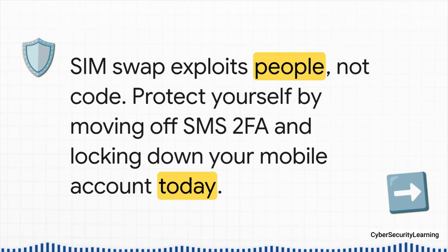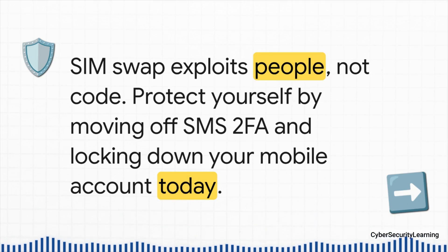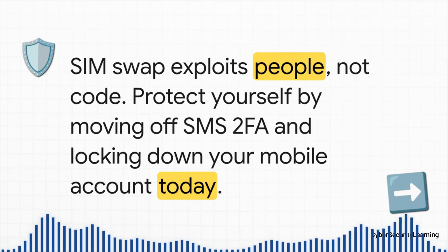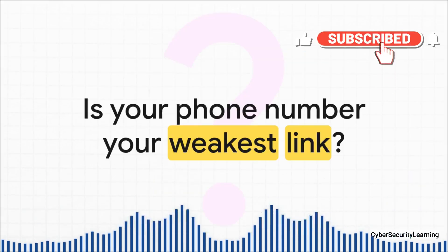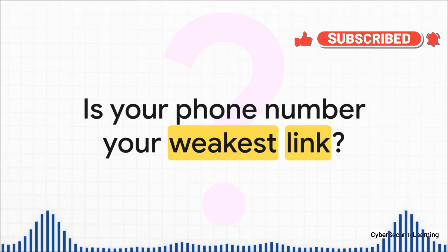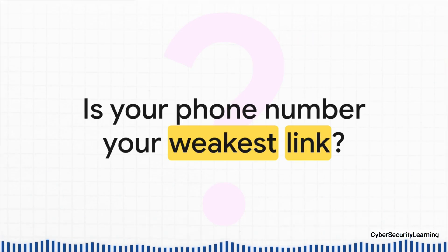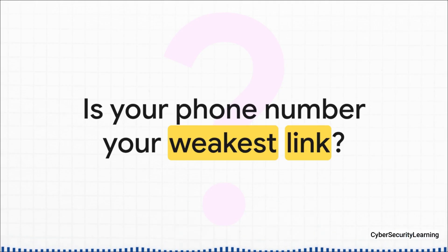If you take one thing away from this, let it be this: SIM swap is a human problem. It exploits people and sloppy procedures, not fancy code. So your defense has to be human too. It starts with you, right now, going into your settings and getting rid of SMS 2FA, and continues with you calling your mobile provider to add a PIN to your account. Seriously, don't wait — it's one of the single best things you can do to protect your entire digital life. We all treat our phone number like a trusted key that unlocks everything. But after seeing how easily a stranger can steal it, you have to ask: has your phone number become your single weakest link?